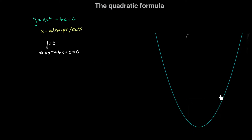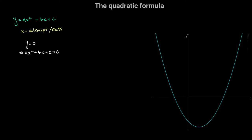I want to determine the values of the x-intercept in terms of a, b, and c. It's actually easier to solve this equation if we first convert this quadratic equation into the completed square form: y is equal to a times (x minus h) squared plus k, where the coordinates of the vertex are (h, k).